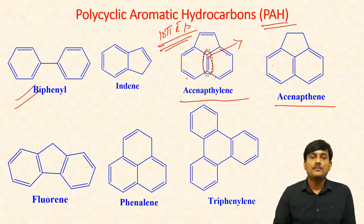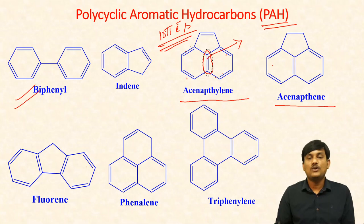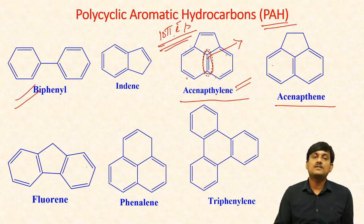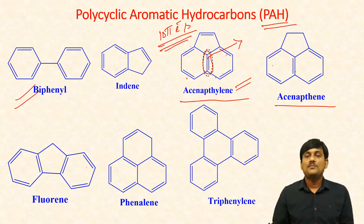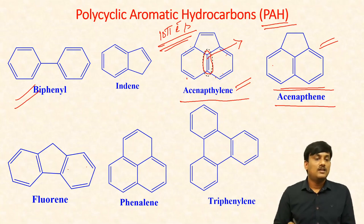Even though acenaphthalene has six pi bonds and 12 pi electrons, you have to count only these five bonds that are participating in the delocalization. In case of acenaphthalene, only 10 pi electrons are in delocalization. Acenaphthalene has two benzene rings — that's why it is aromatic. And fluorene: two benzene rings are connected by a single bond, so this one is also aromatic.